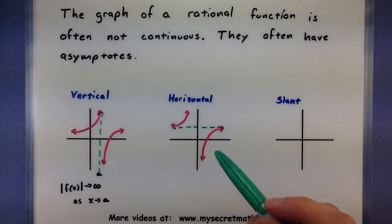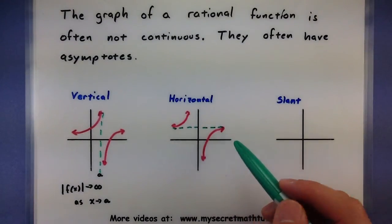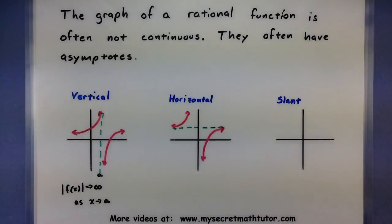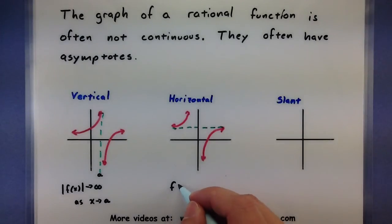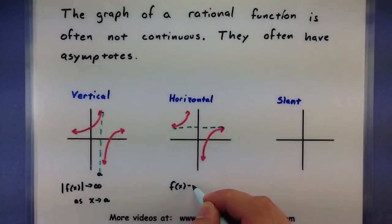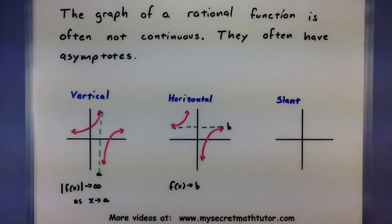There we go. So again, you can see that the function wants to get really close to this line. So it's tending towards that value. The way we describe this one is we say that the value of the function is now approaching some sort of value. Let's call it b.